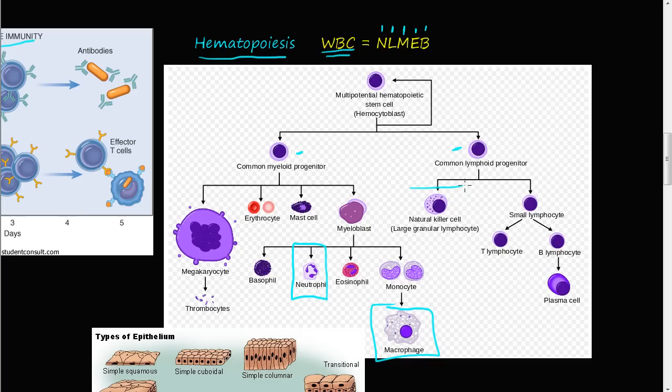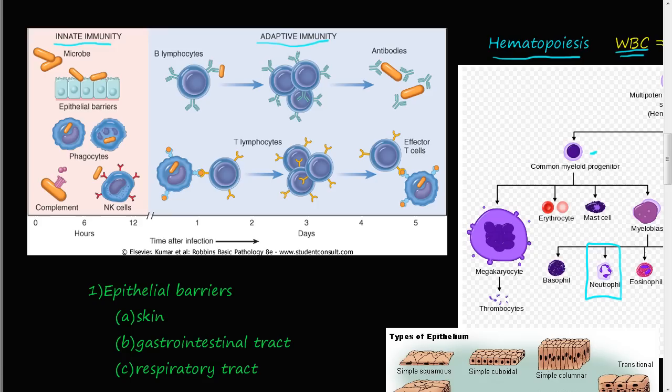The common lymphoid progenitor gives rise to the natural killer cell and small lymphocytes. Small lymphocytes give rise to T lymphocytes and B lymphocytes, and B lymphocytes give rise to plasma cells — these are part of the adaptive immunity. For the innate immunity, we will talk about natural killer cells, neutrophils, and macrophages. There are four main parts of the innate immunity we'll cover.